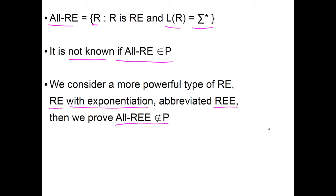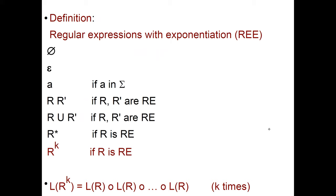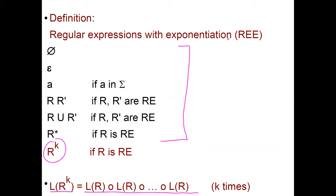A regular expression with exponentiation is just an RE like before, but in addition we add the capability of writing r to the k, where k is an integer, and this is the concatenation of the expression r k times. So the language of r to the k is the concatenation of the language of r k times. Of course I could do this just using plain concatenation — so what is the gain here?